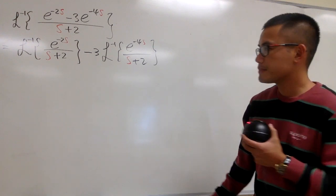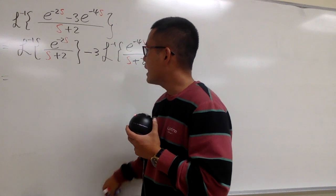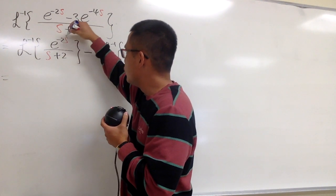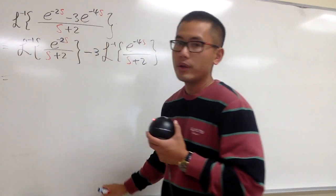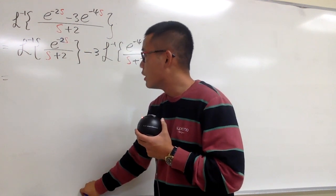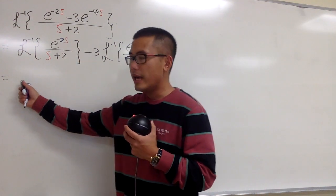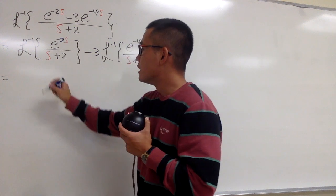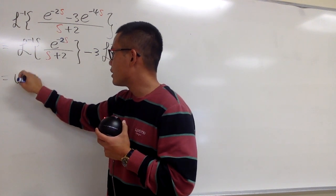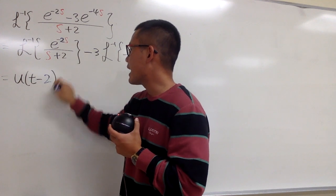For this one, you see that this is negative 2s. So the a value here is 2. Whenever we have e to the negative as, we are going to end up with a unit step function, u of t minus a. So let me put that down, u of t minus the a, which is the 2.